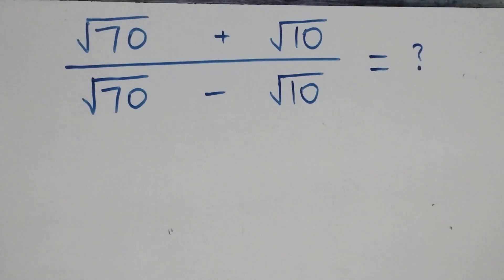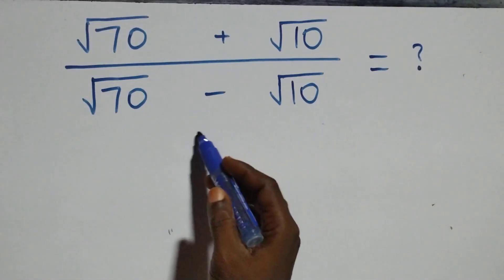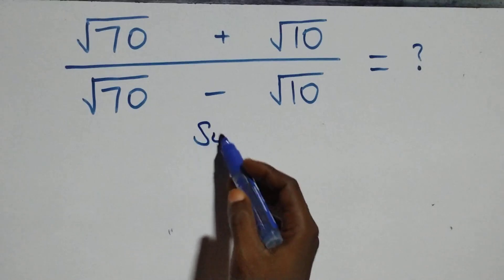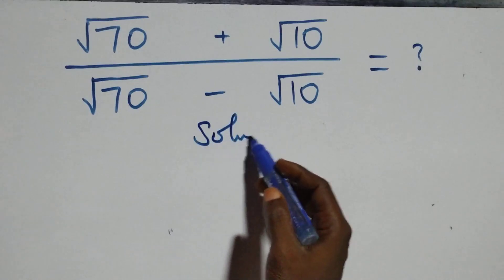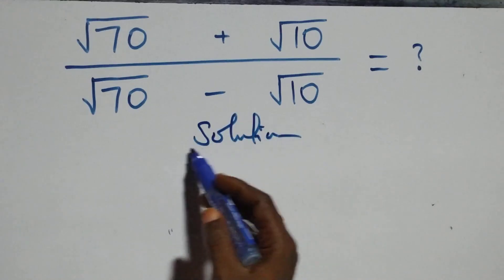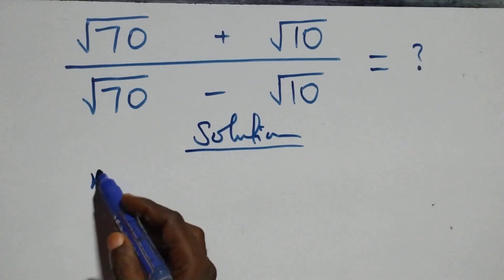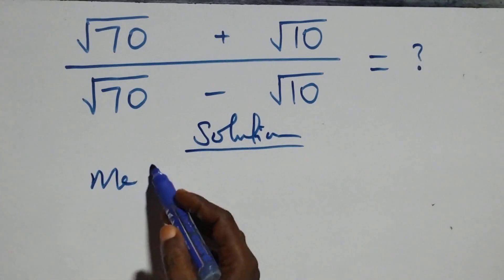Hello, welcome. We'll solve this nice square root problem. We'll use two methods here — the first method and the second method.